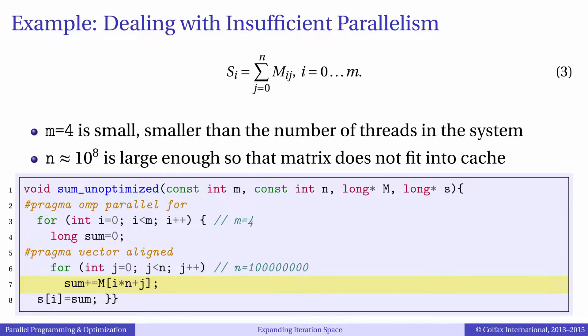However, the problem that we want to illustrate occurs when the outer loop has just a few iterations. To exaggerate the problem, we choose the number of rows, m, equal to 4, while the number of columns is in the hundreds of millions. So we are dealing with a very short but wide matrix.